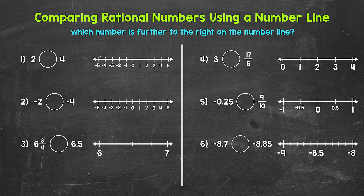Now remember, when it comes to number lines, if we look at zero, positive numbers are to the right of zero, and negative numbers are to the left of zero. And keep in mind, as far as moving along a number line, numbers increase in value as we move to the right, and decrease in value as we move to the left.